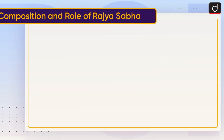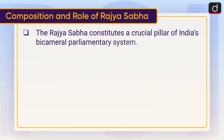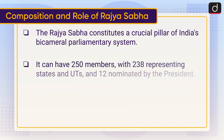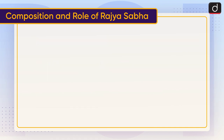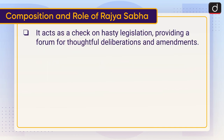The Rajya Sabha constitutes a crucial pillar of India's bicameral parliamentary system. It can have 250 members, with 238 representing states and Union Territories and 12 nominated by the President. It represents the interest of states and Union Territories in the legislative process. It acts as a check on hasty legislation, providing a forum for thoughtful deliberations and amendments.